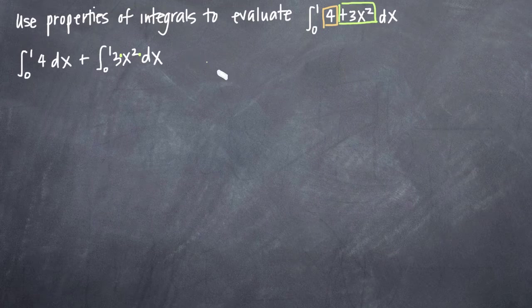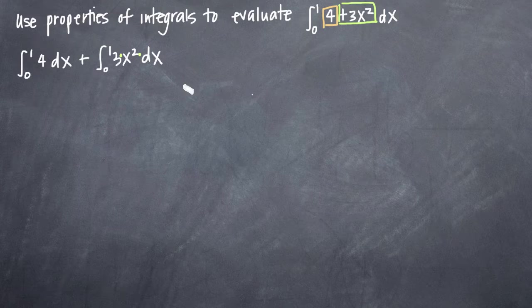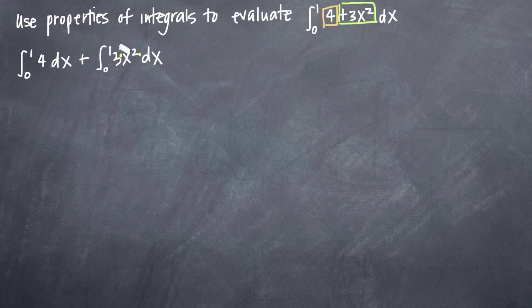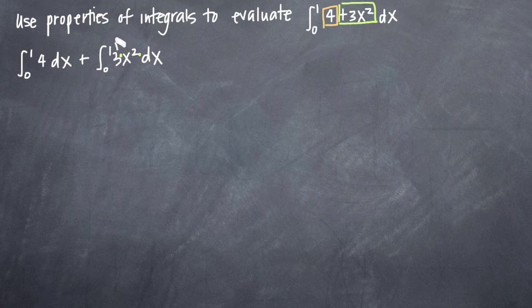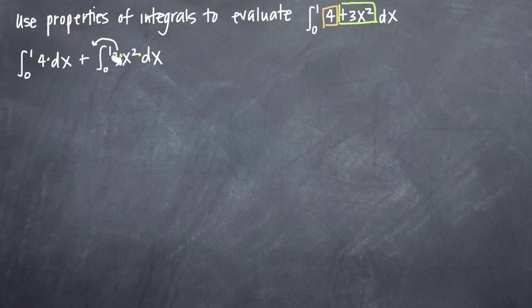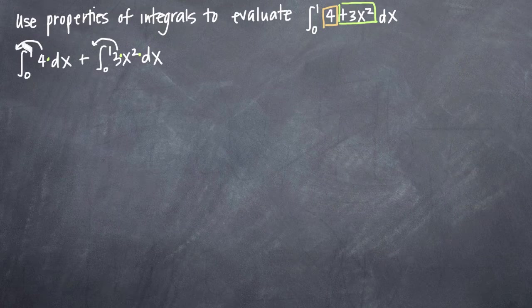All three of these are multiplied together. Whenever everything's multiplied together or divided, we can pull a constant out in front of the integral. So we have a constant coefficient of 3 that can come out in front here. We have the same thing in our first integral with 4 times dx. Because we have the constant coefficient of 4, it can come out in front.